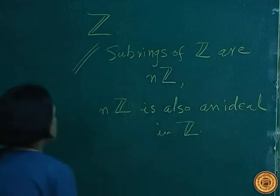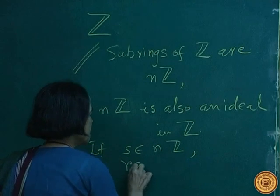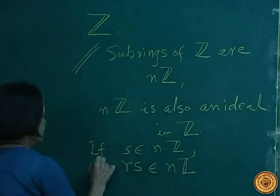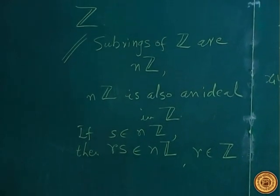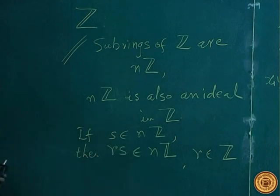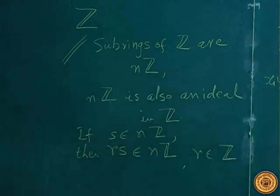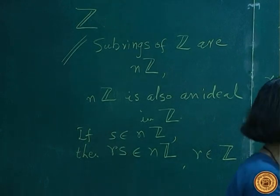Why is nZ an ideal? Because if s is in nZ, then s is a multiple of n. If you further multiply s by any r in Z, it is still a multiple of n and therefore in nZ. So all subrings of Z are ideals. But that does not happen in every ring — you can have different examples giving different subrings and ideals.